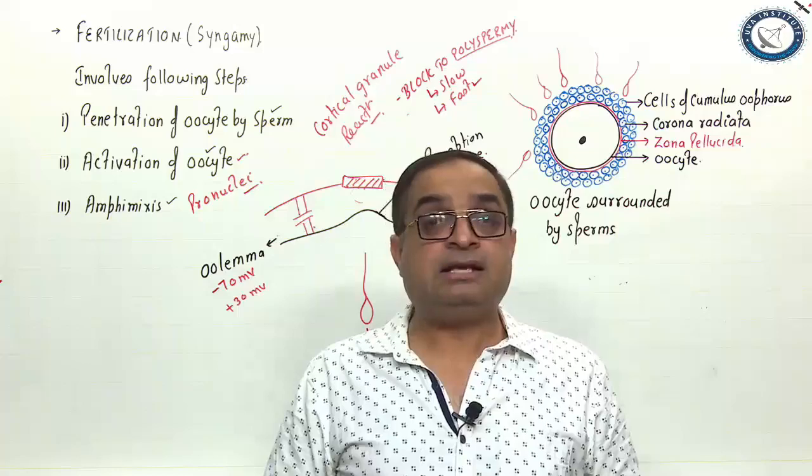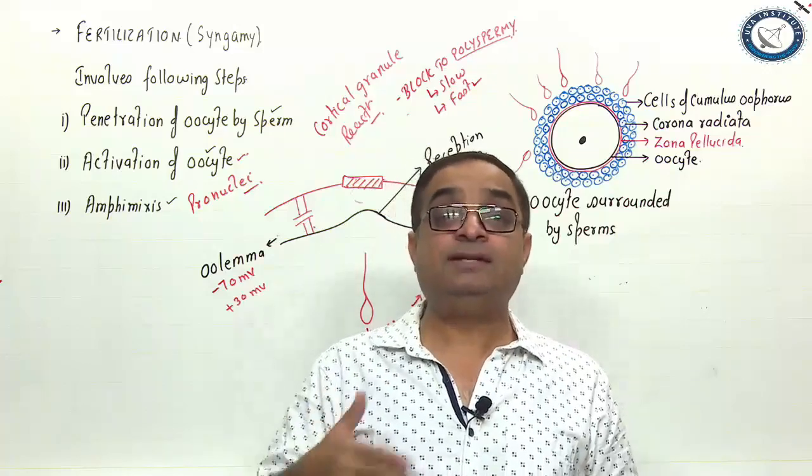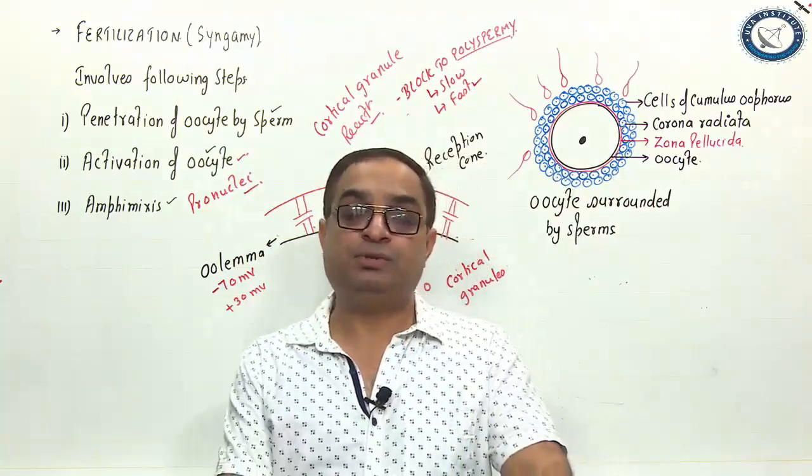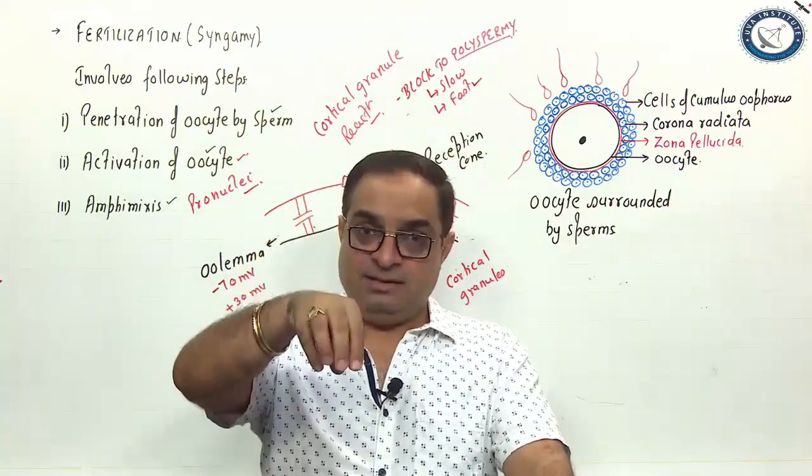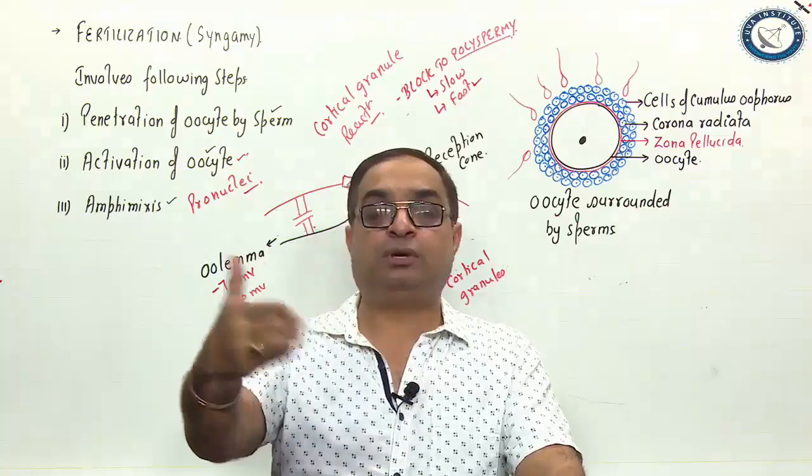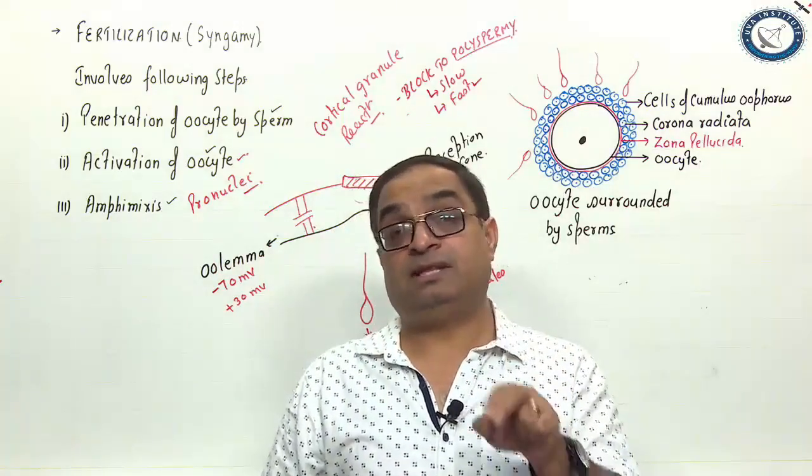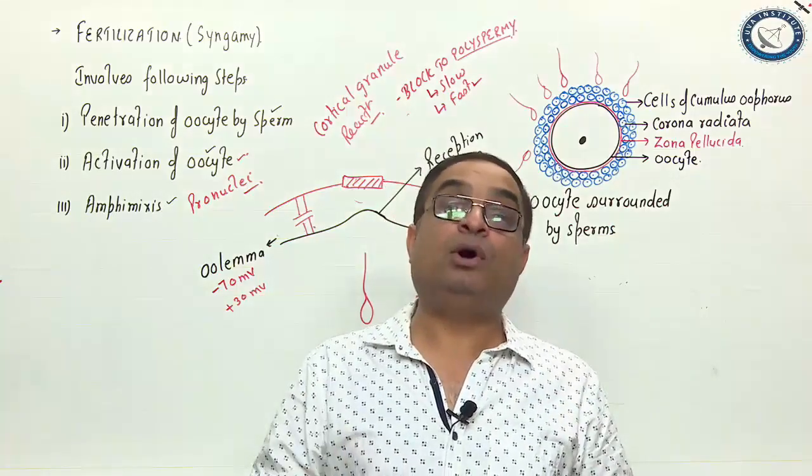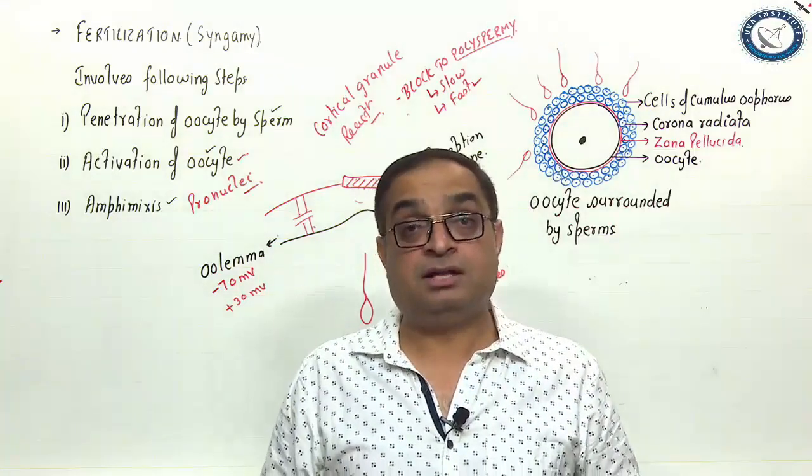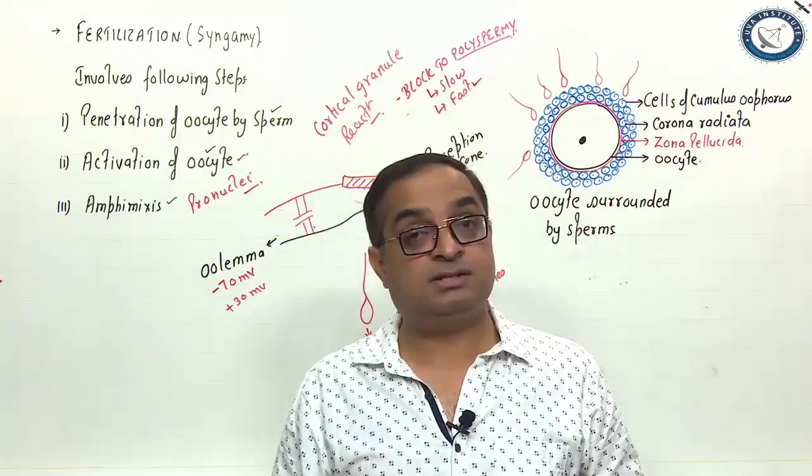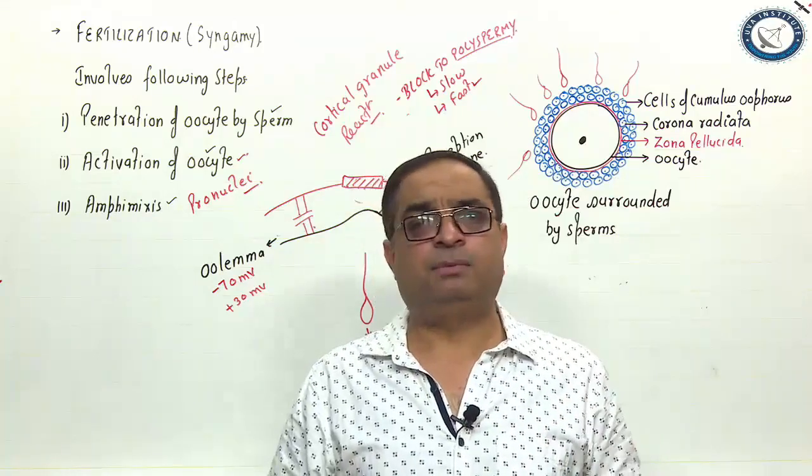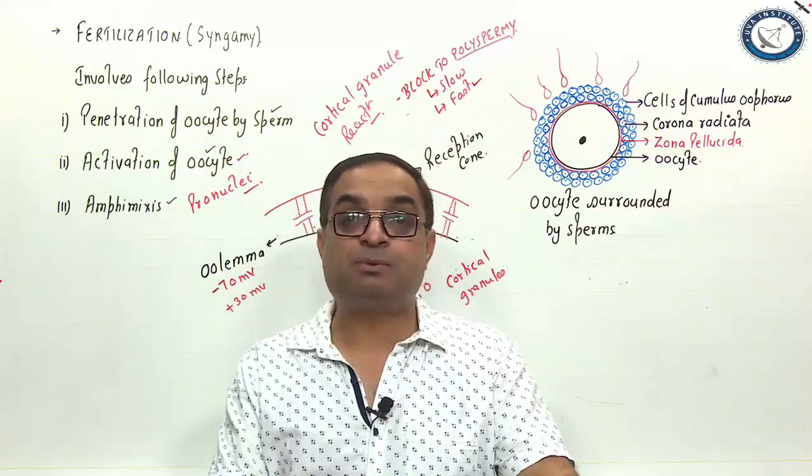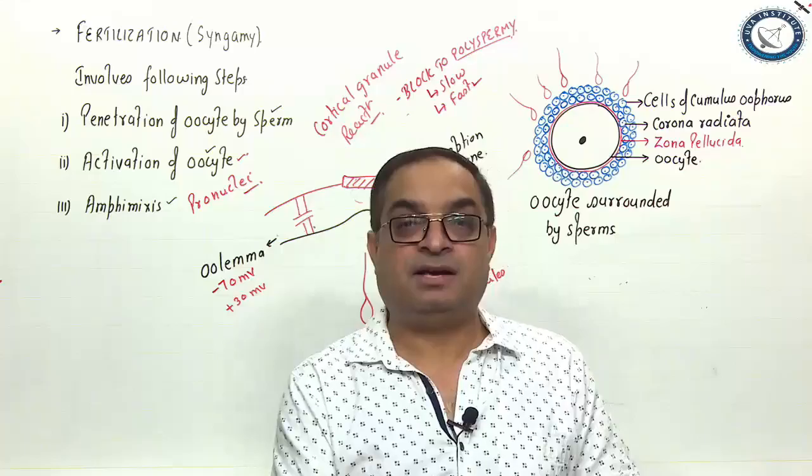Number 2, the entry of sperm stimulates the secondary oocyte to complete its meiosis which is arrested at metaphase 2 stage. Once a sperm has entered, it stimulates the secondary oocyte to complete its meiosis. This is the stage when the second polar body is expelled out and a haploid ovum is formed. The nucleus of which ultimately fuses with the nucleus of the sperm resulting in the formation of the zygote. That completes the process of fertilization. Thank you.